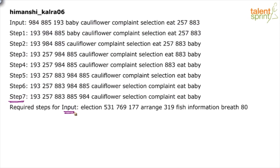The first step in machine input-output is to look at the last step, because we have to identify the logic behind the output. Once you have the logic, it becomes very easy. The first observation is: all the numbers are together and all the words are together. The numbers have been arranged in ascending order: 193, 257, 883, 885, 984.